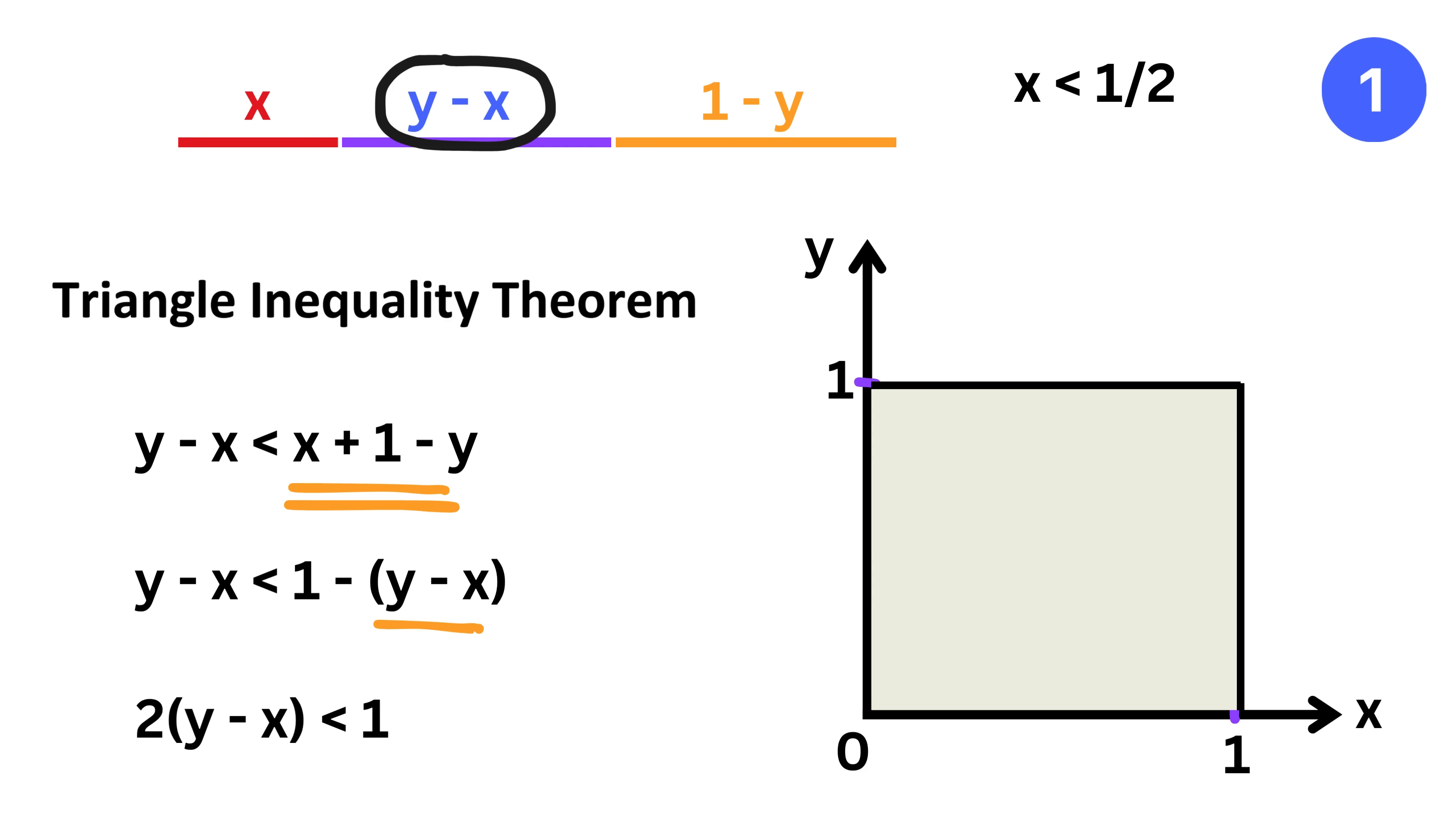Take it here to get two times (y minus x) is less than one, which reduces to y minus x being less than one half. Take x here to get y is less than x plus half.